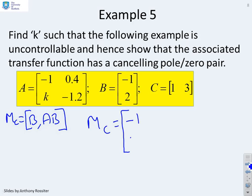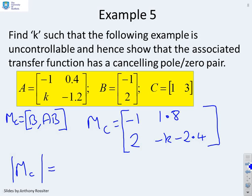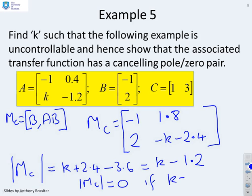Now, this is going to be given by... We know what B is. It's minus 1, 2. And AB, you can do in a fairly straightforward fashion. You'll see that it's 1.8 and then it's minus K minus 2.4. So now, if I calculate the determinant of MC, you'll find it's K plus 2.4 minus 3.6, which is K minus 1.2. And therefore, the determinant of MC equals 0 if K equals 1.2.